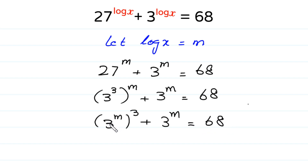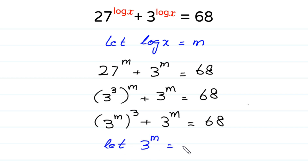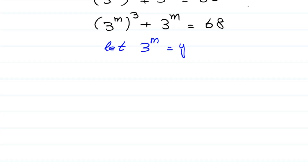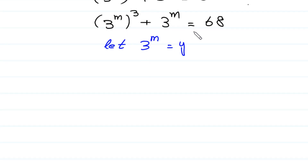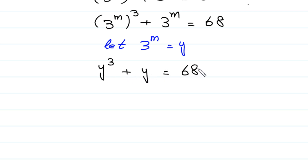Now, we can see here 3 to the power m and here 3 to the power m. So we suppose that 3 to the power m is equal to y. Let 3 to the power m equal y. Then this equation becomes y to the power 3 plus y is equal to 68.